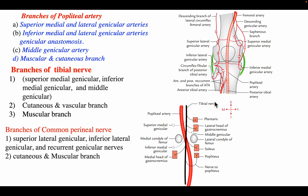All the genicular arteries, which are branches of the popliteal artery, are shown in the diagram, as are all the branches of the tibial nerve. This topic will be covered in more detail in the next lecture, but for a 10-mark question you can write all of these points.